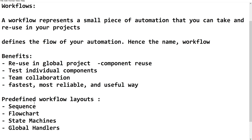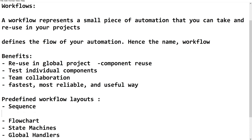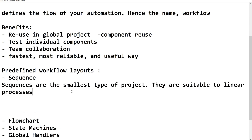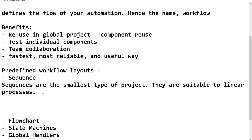The predefined workflow layouts available in UiPath are: Sequence, Flowchart, State Machine, and Global Exception Handler. Let us look into each. Sequence is the smallest type of project, where the flow passes from one activity to another in a sequential way. It is suitable for linear processes — for example, reading data from a PDF or Excel file and performing operations on it. This workflow can be reused across the entire project wherever needed, and it can also be reused inside flowcharts and state machines.